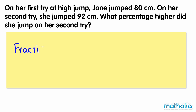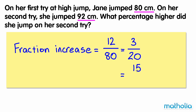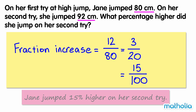The fraction increase is given by dividing the height increase by her original jump height. 12 over 80 equals 3 twentieths. Multiplying the numerator and the denominator by 5 gives 15 over 100. 15 one hundredths equals 15%. So Jane jumped 15% higher on her second try.